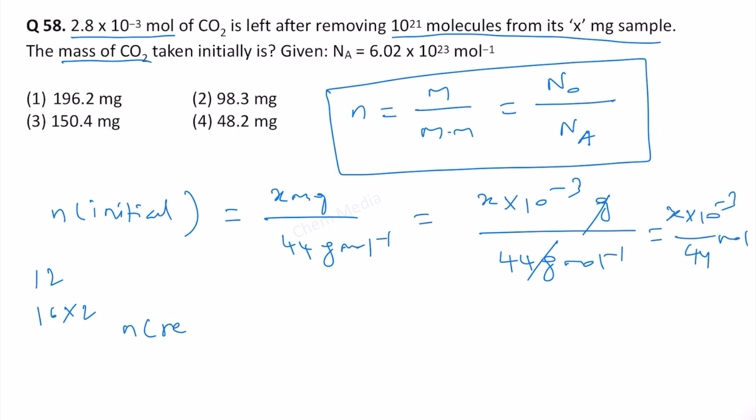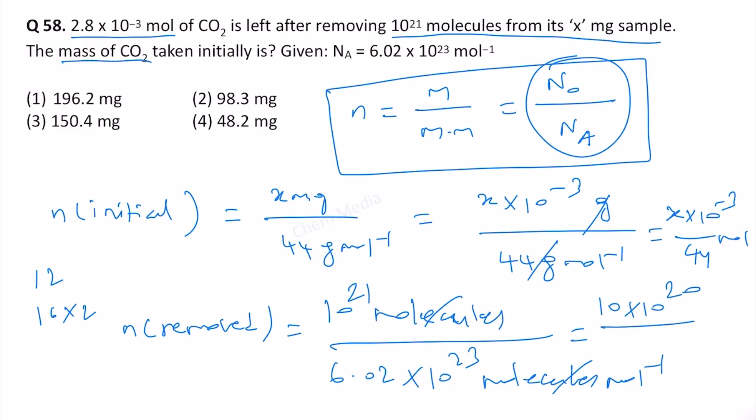What is the number of moles removed? We have removed 10 to the power 21 molecules. In one mole we have Avogadro number of molecules. Therefore, 10 to the power 21 molecules divided by 6.02 times 10 to the power 23. Let us write this as 10 to the power 20 so that we can use 10 to the power minus 3 as the common factor. The number of moles removed will be 10 divided by 6.02 times 10 to the power minus 3 mole.